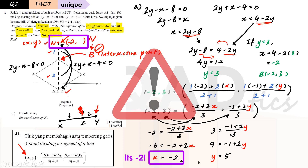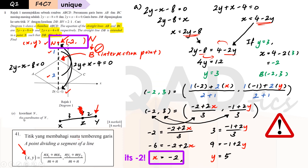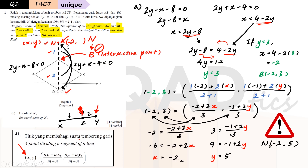So now we are finding the coordinates of N, and we need to write it in coordinate format. The final answer is N bracket negative 2, 5.